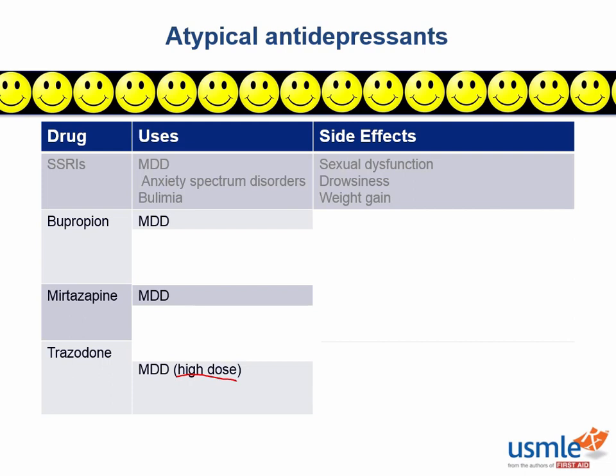None of these are indicated for use in the anxiety spectrum disorders, but bupropion is additionally indicated for use as a smoking aid, and trazodone is so sedating that it's mainly just used for insomnia these days. The really high-yield stuff comes from the side effect profile, because that's what determines who you can and can't use these medications on.